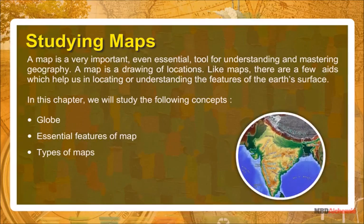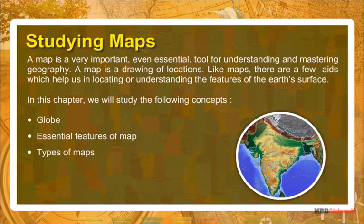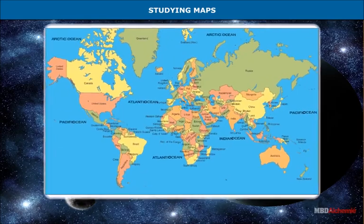A map is a very important, even essential tool for understanding and mastering geography. A map is a drawing of locations. Like maps, there are a few more aids which help us in locating or understanding the features on the earth's surface. In this chapter we will study the following concepts: globe, essential features of map, types of maps, and studying maps.